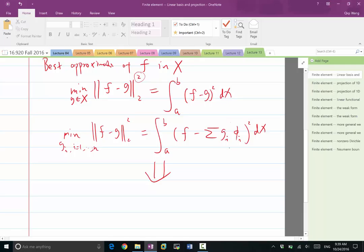And we derived the condition that the minimizer has to ensure that the distance between f and g is going to be orthogonal to any function in the same linear space.